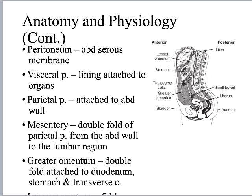Within the peritoneum there's the mesentery, which is a double fold of the parietal peritoneum within the lumbar region. I think about it as the conference rooms of the peritoneum — smaller rooms within the large room. Above that we have the greater omentum, a double fold that attaches to the stomach, duodenum, and transverse colon. The lesser omentum attaches to the lesser curve of the stomach and duodenum.